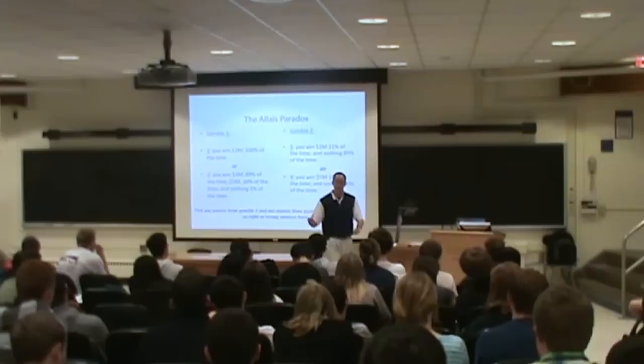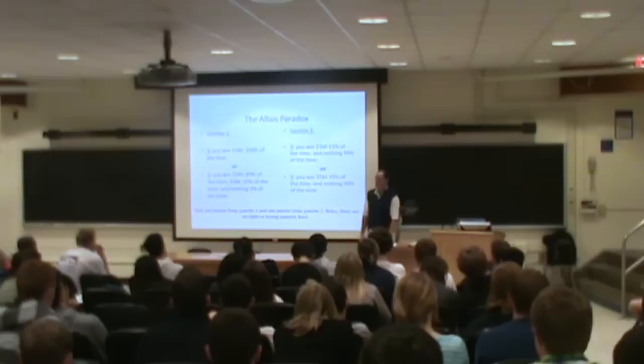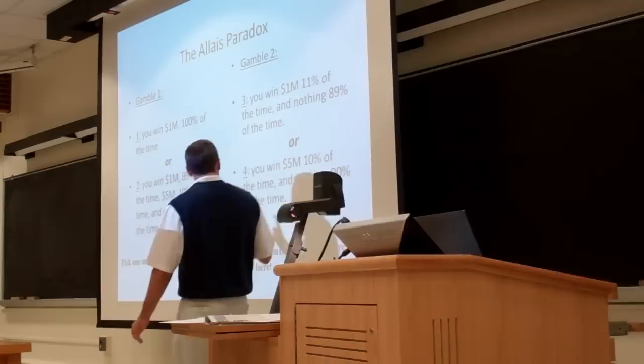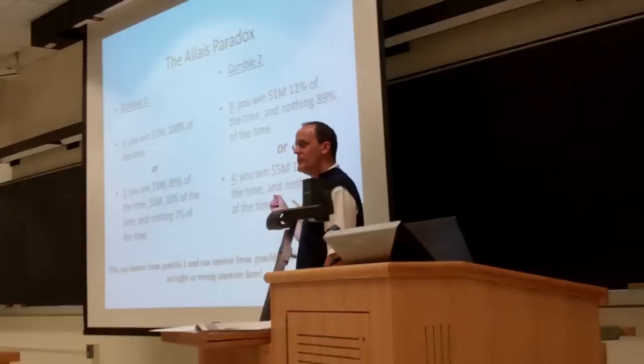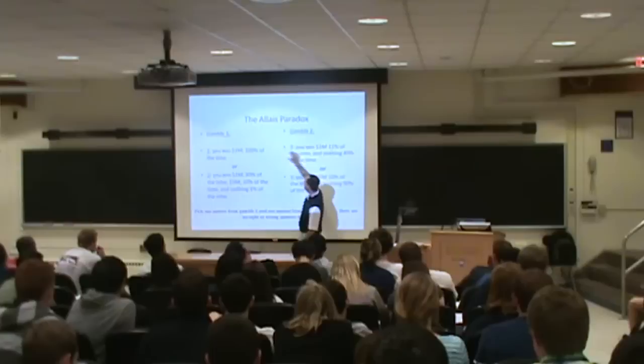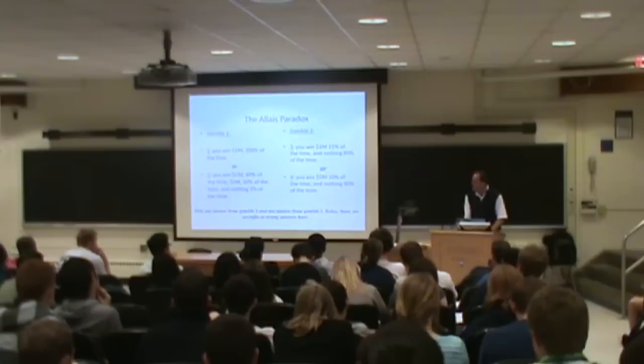But then we had a bunch of you who said one and four. Well, that doesn't make a whole lot of sense on the surface, because one is the sure thing and four is the riskier option. So if we were thinking about risk tolerances, the choice of one and four looks like a preference reversal — the same way two and three would be. There are just more of you on one and four. So there are two possible sources of preference reversal.